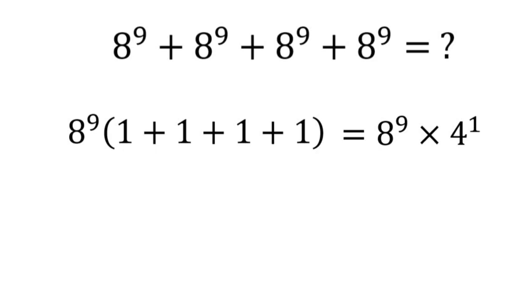Now what we want to do is make it so our bases are equal to each other. So we can rewrite 8 as 2 to the power of 3 and 4 as 2 squared. So we would have 2 to the power of 3 to the power of 9 times 2 squared.